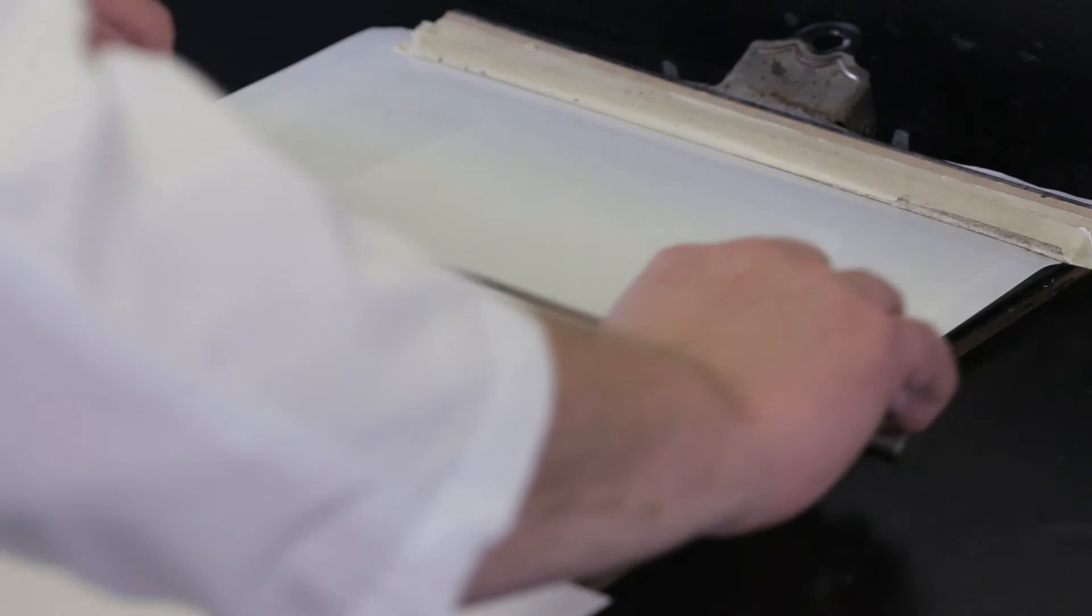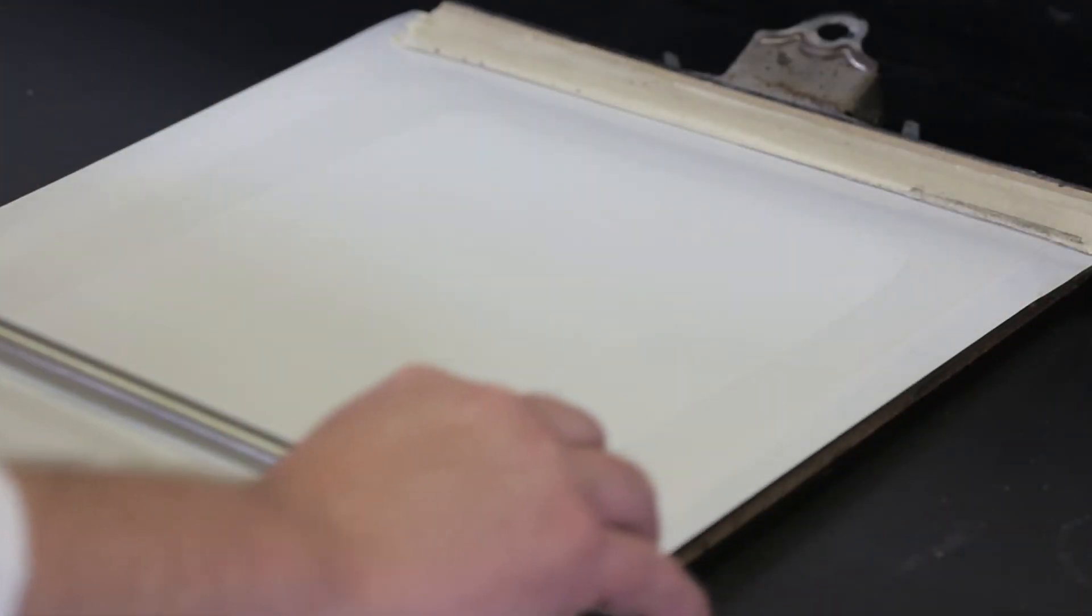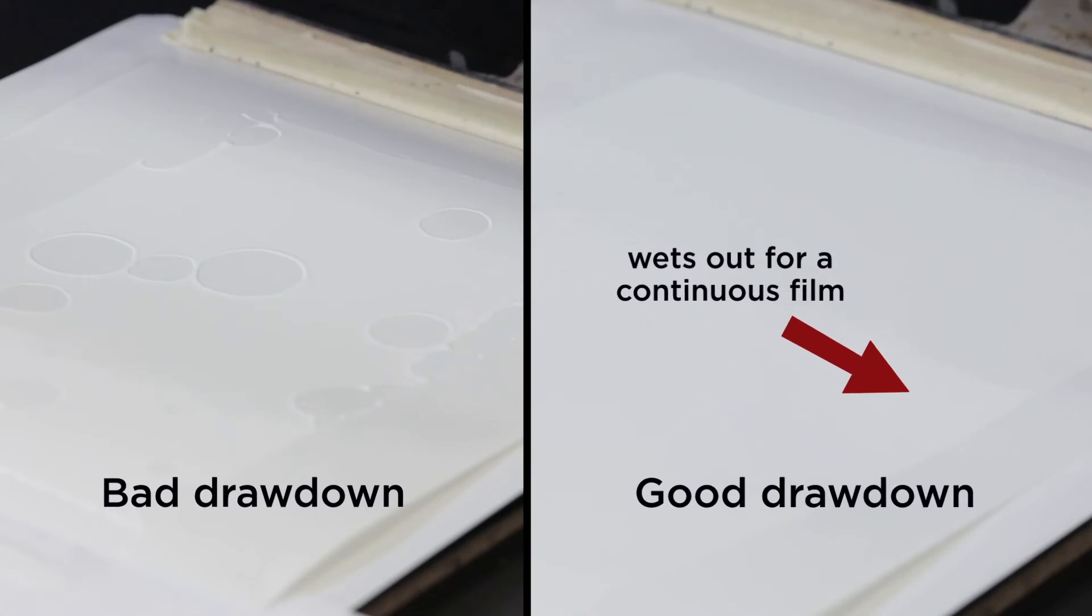The first example is illustrating an unformulated base polymer. The second drawdown is showing a formulated, coater-ready adhesive. Notice how much better the formulated adhesive performs.